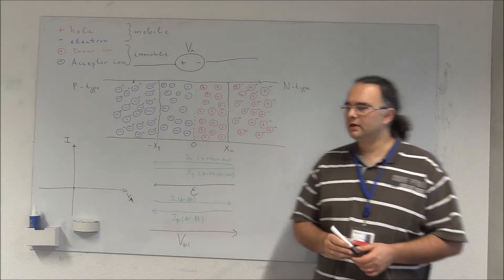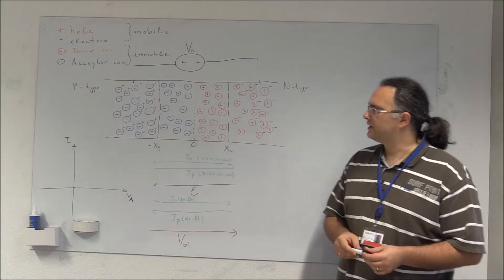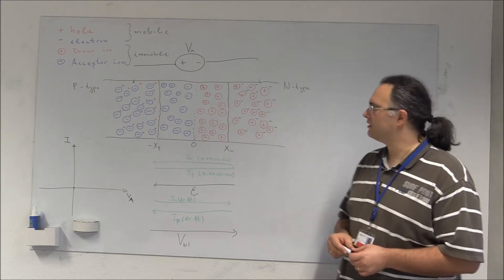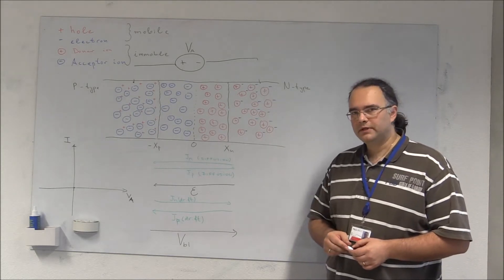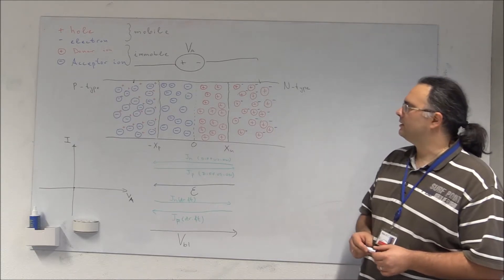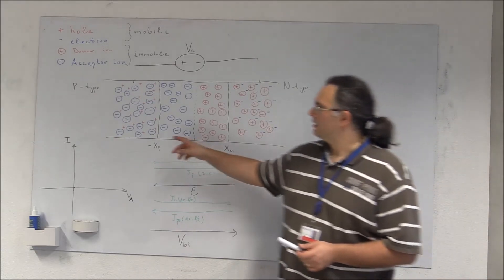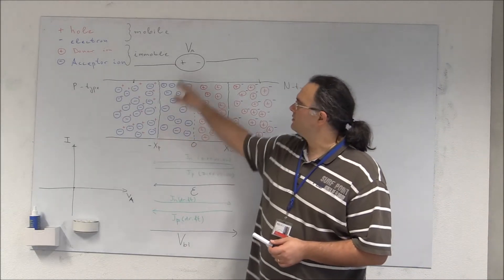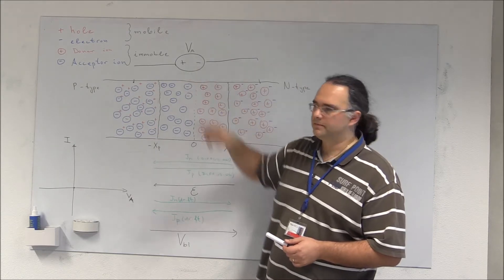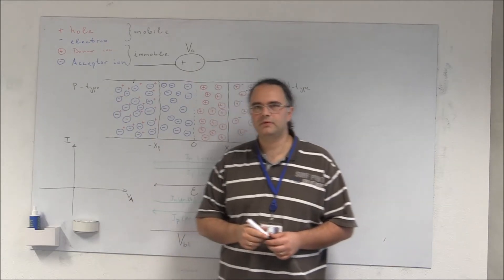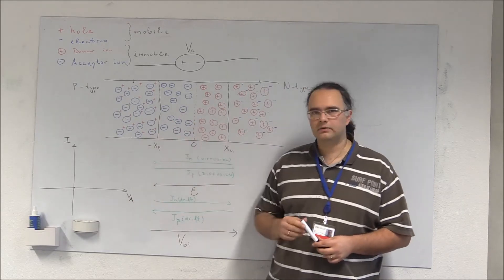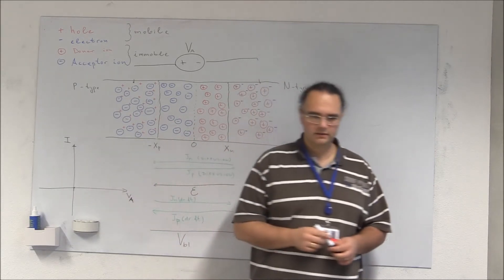In this web lecture I will derive the relationship between the injection of minority carriers, electrons, in a PN junction in relation with the externally applied voltage — the relationship between the biasing voltage of a PN diode and its current.